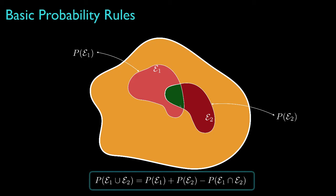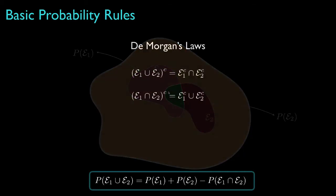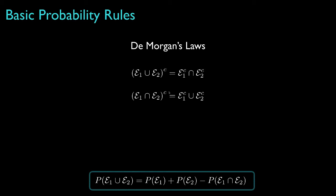This rule is very useful in many situations, and its utility is greatly enhanced by using DeMorgan's laws, which say that the complement of the union of two events is the intersection of the complements of the events, and the complement of the intersection of two events is the union of their complements.